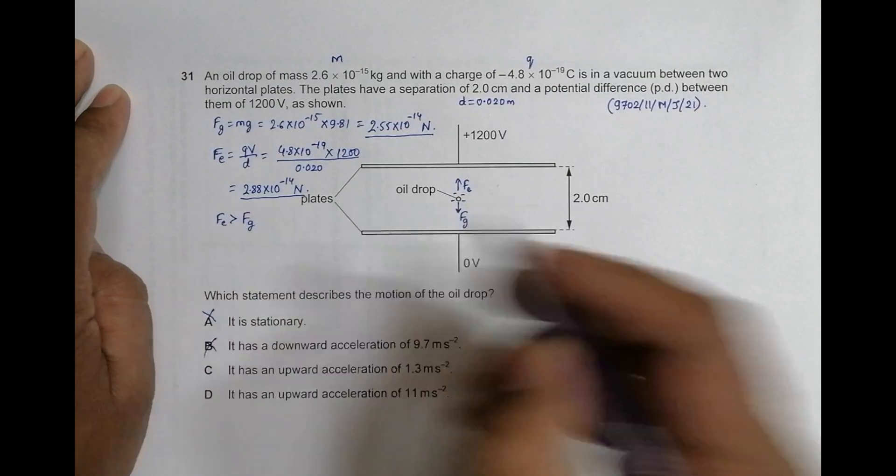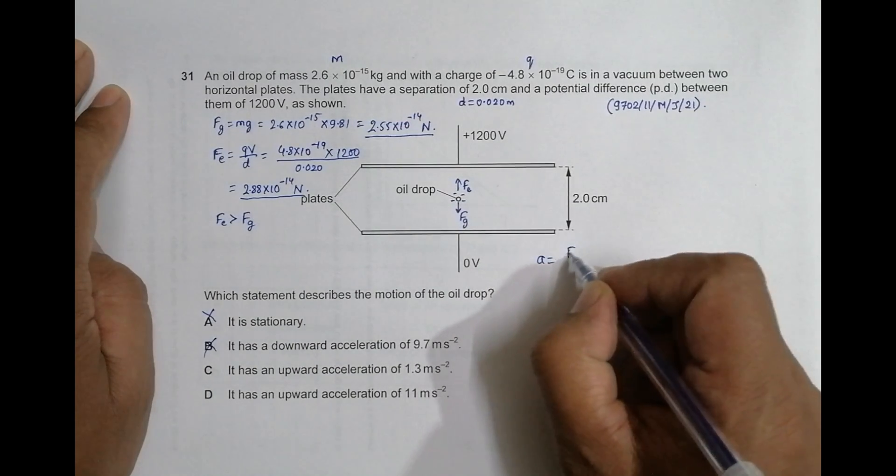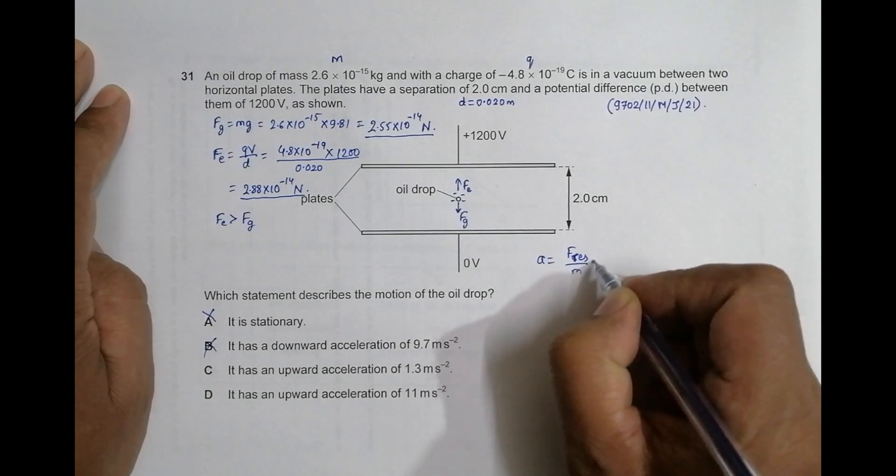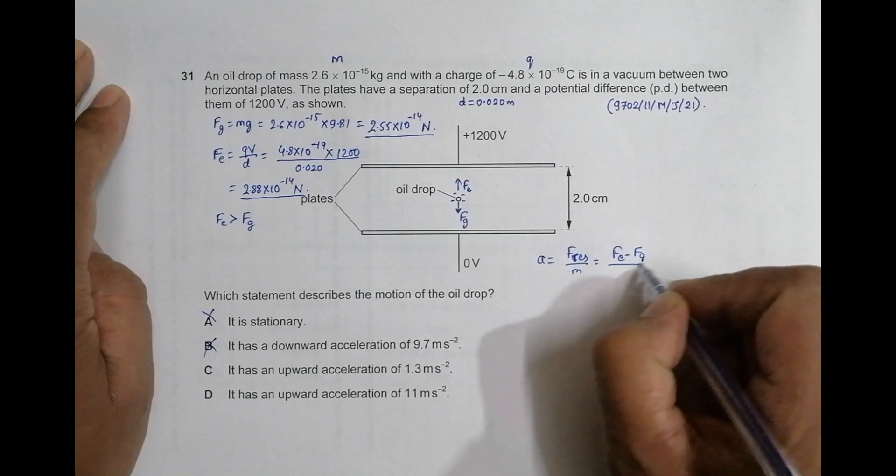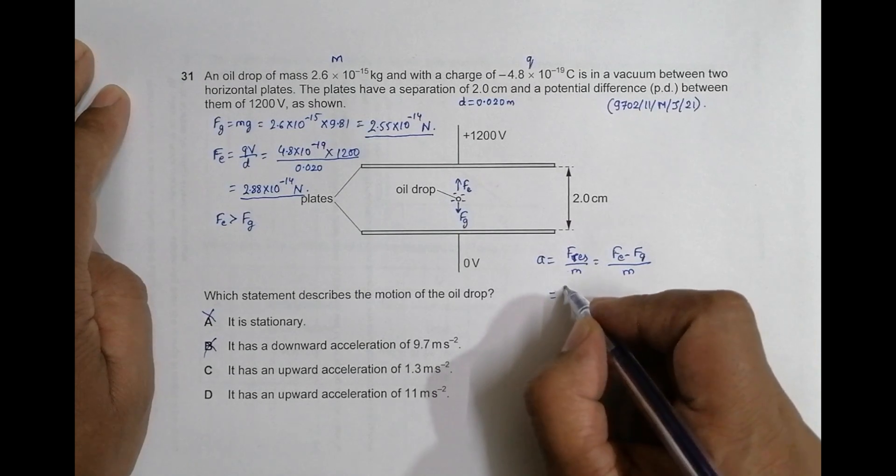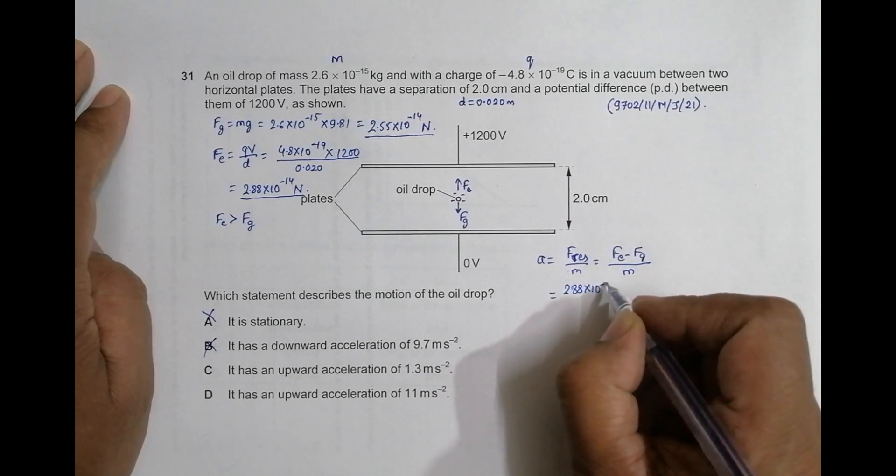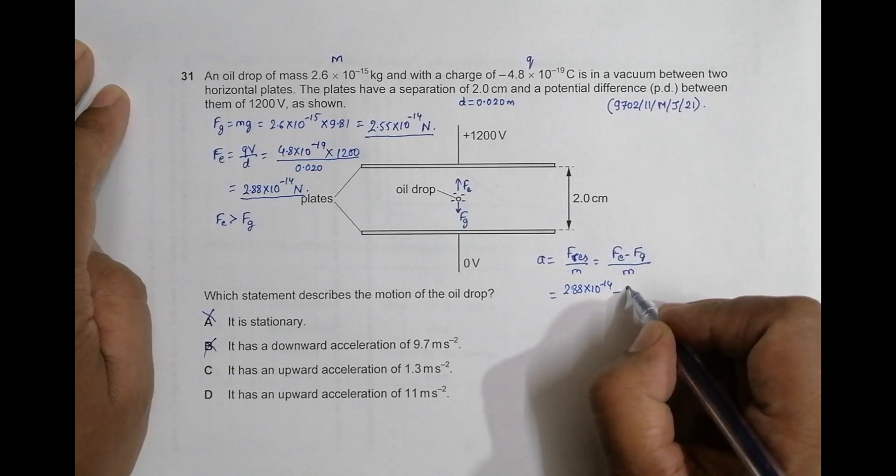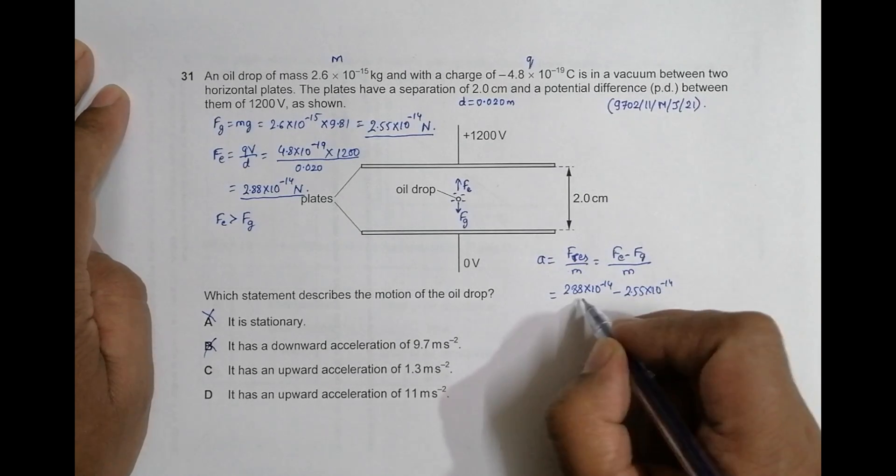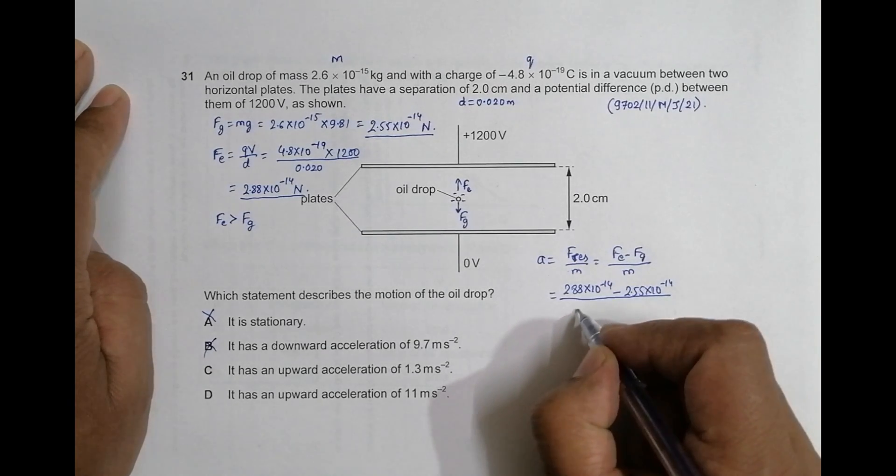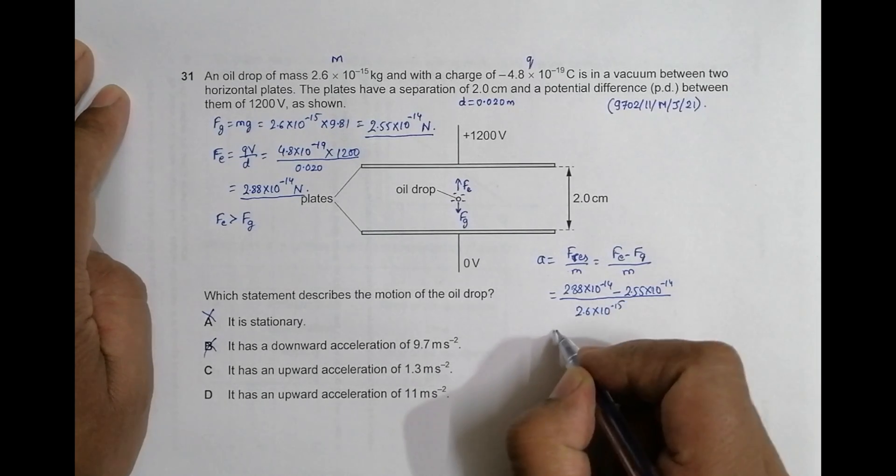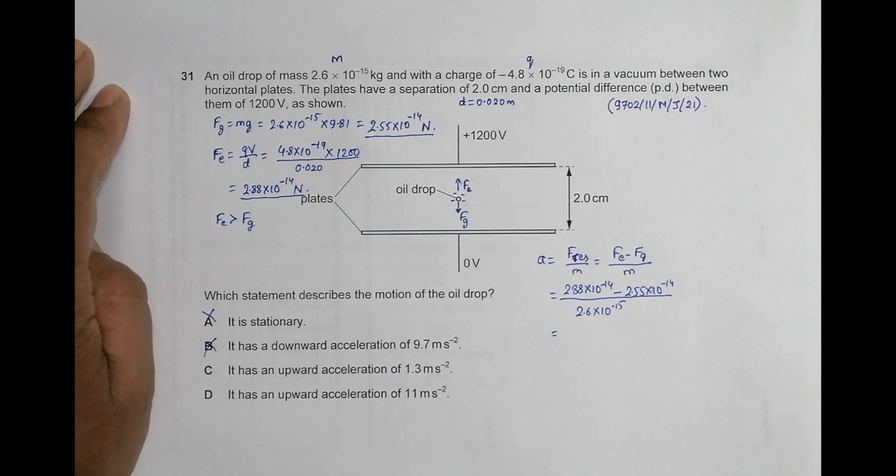This acceleration will equal F resultant divided by mass, that's equal to FE minus FG divided by M. And that will be equal to 2.88 × 10^-14 minus 2.55 × 10^-14, whole divided by the mass which is 2.6 × 10^-15. So it's 2.88 × 10^-14 minus 2.55 × 10^-14, whole divided by 2.6 × 10^-15.